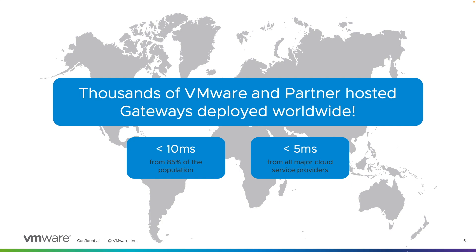VMware-hosted gateways are located in VMware Edge POPs, which are placed at strategic cloud locations to establish direct peering connections with all major SaaS and IaaS providers, providing sub-5-millisecond latency between POPs and cloud applications.